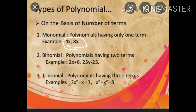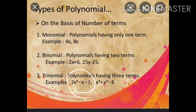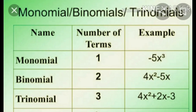In the first example, 4x and 8x — it has one term. In the second example, 2x + 6, there are two terms, so it's known as binomial. In the third example, 2x² - x - 3, there are three terms, so it's known as trinomial. To summarize: one term is monomial, two terms is binomial, three terms is trinomial.